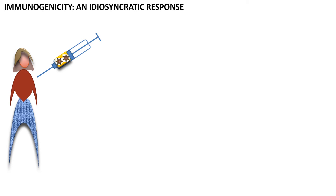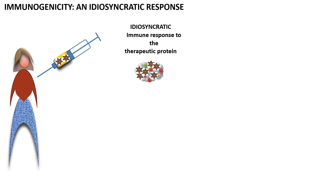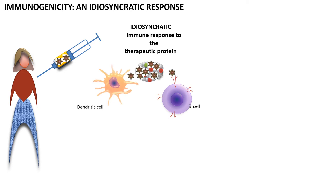Immunogenicity is an idiosyncratic response to a drug that is a therapeutic protein. What happens is that the particular drug will be perceived as a danger signal by the B-cell or the dendritic cell. Both of them are antigen-presenting cells. They can process the whole drug perceived as a danger signal and present the T-cell epitope, which the T-cell will recognize as dangerous. Under appropriate conditions of co-stimulation, this T-cell will be activated to mount an immune response against the drug.